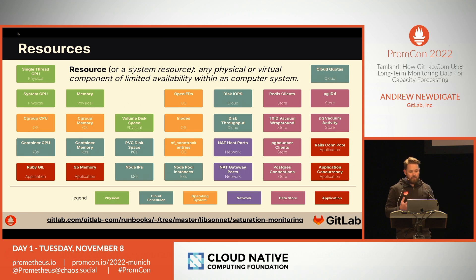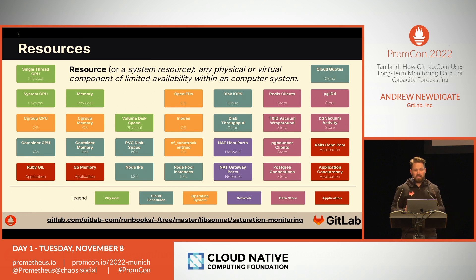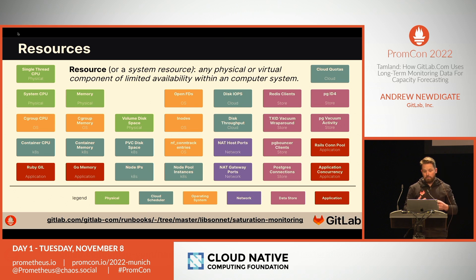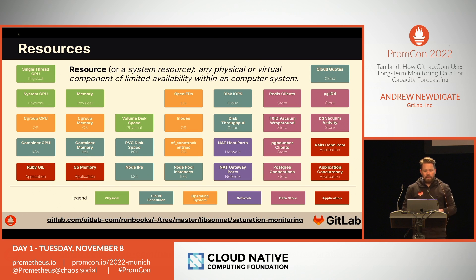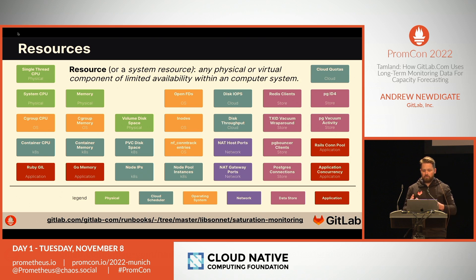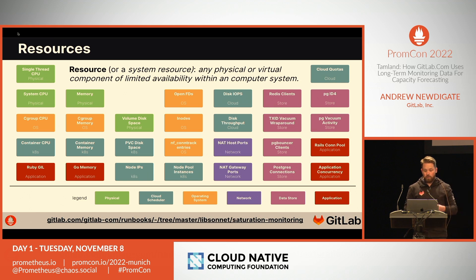An example of a resource at a network level, at least within the cloud provider, is NAT host ports — when this hits capacity, your application may experience connectivity issues. Databases add many more resources; database connection pools in the application and within connection pooling infrastructure are just one example. In languages like Python and Ruby, much of the application runs on a single thread behind a global interpreter lock, and this thread can be viewed as a type of resource with an upper limit of a single call. Your application may also have custom concurrency limits to protect itself from traffic spikes, and these can be treated as resources too. We currently monitor about 41 different resource types on GitLab.com.